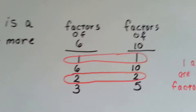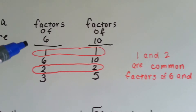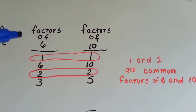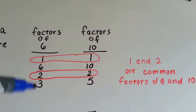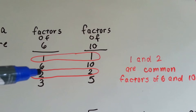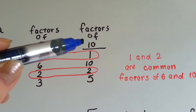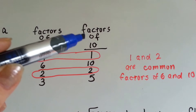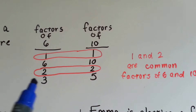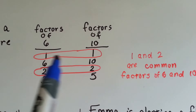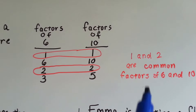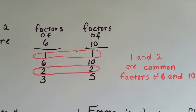Let's take a look at the factors of 6 and factors of 10. Factors of 6 — the numbers we multiply to get 6 — are 1 times 6 and 2 times 3. The factors of 10 would be 1 times 10 and 2 times 5. They both have a 1 and they both have a 2, so 1 and 2 are common factors of 6 and 10.